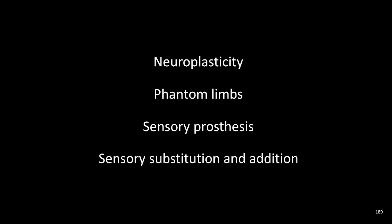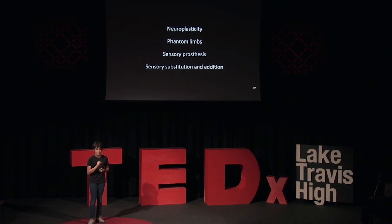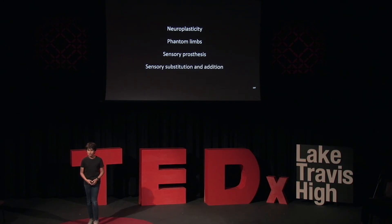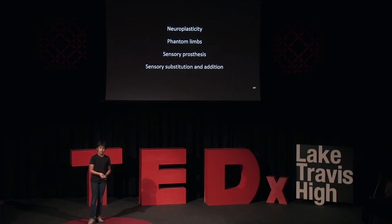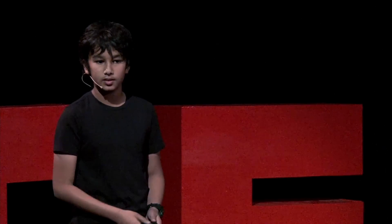Neuroplasticity is your brain's ability to change, and you can see it in phantom limbs and sensory prosthesis. Sensory addition and sensory substitution are ways to explore our world with new senses.